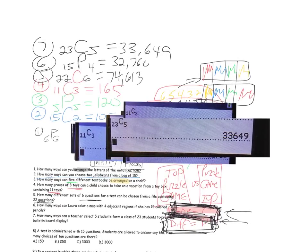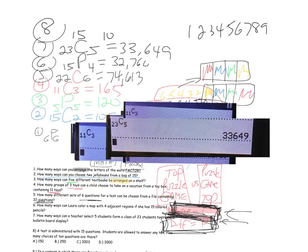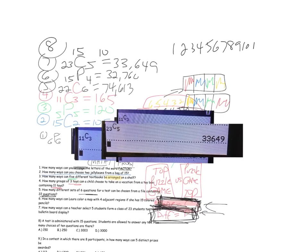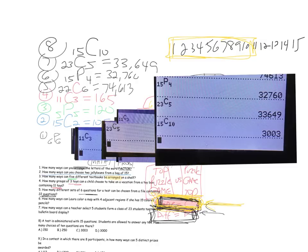Problem eight: a test has 15 questions and students may answer any 10. How many choices of 10 questions are there? We have 15 and 10. If a student answers questions one through ten, that's the same as answering questions ten through one — they answered the same 10 questions, so the order doesn't matter. We use combinations: 15C10, or 3,003 different ways.